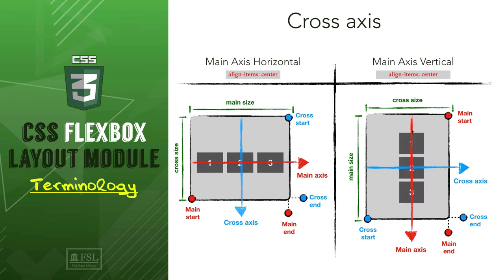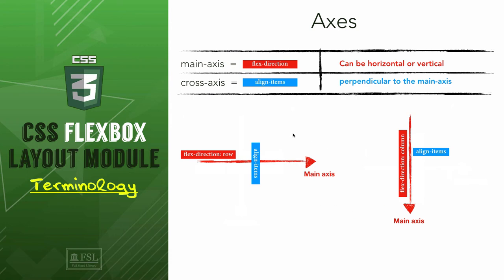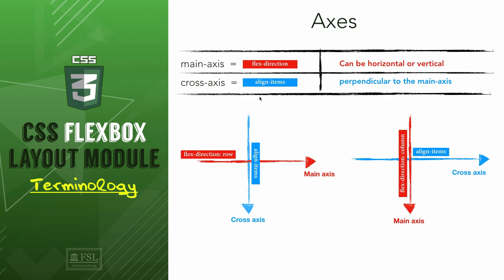What you need to take from this whole story of axes is: once we use flex-direction on the flex container, think of it as controlling the main axis and the way elements are distributed. The cross axis is always perpendicular to the main axis, and the property that controls it is align-items. So flex-direction controls the main axis, and align-items controls the cross axis.